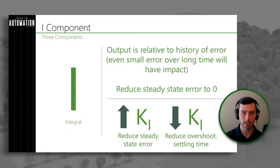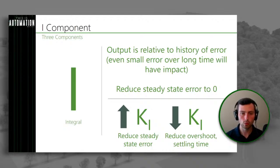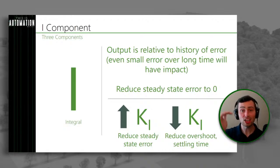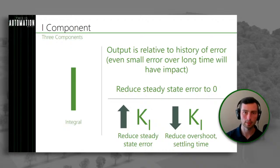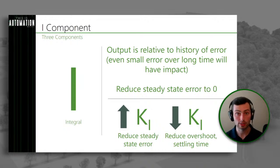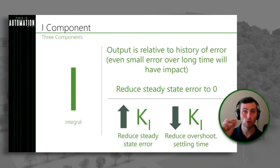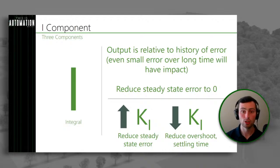The I component is the integral component, and it looks at the relative history of the error. One of the things the I component is most commonly used for is reducing steady state error — that means once your system has gotten to a steady state, it could still have an error. Using our thermostat example: we have it set to 72, but we're at 68 and it's not changing — that's an example of steady state error. The integral component is really good at fixing those issues because it looks at how much error is accumulating over time. The integral gain is typically denoted as KI, though you may also see TI.